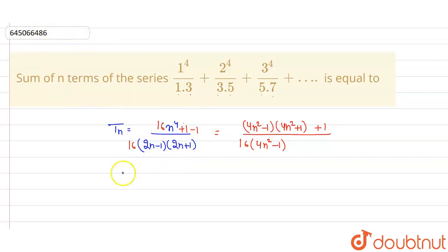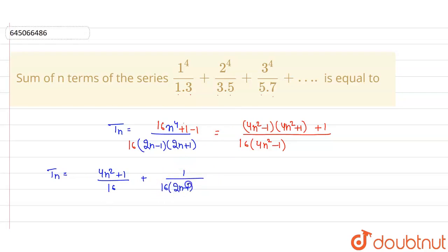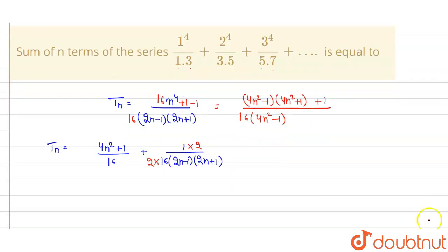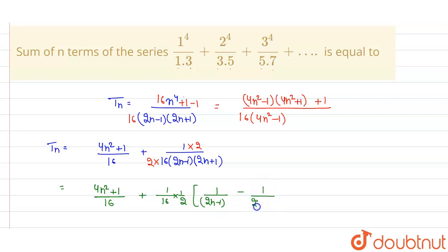We evaluate this by taking terms individually. We will have (4n² + 1) / 16 as the remaining term. On the other side, we have 1/16 times 1/((2n − 1)(2n + 1)). Multiplying and dividing by 2, this term can also be written as 1/32 times (1/(2n − 1) − 1/(2n + 1)).